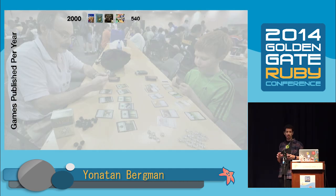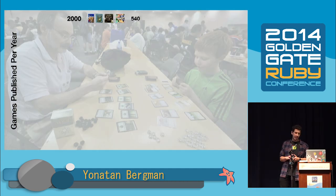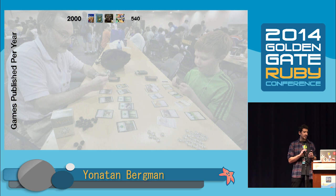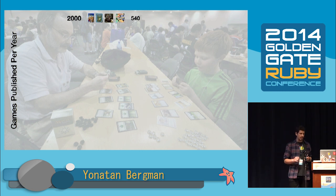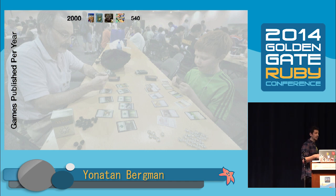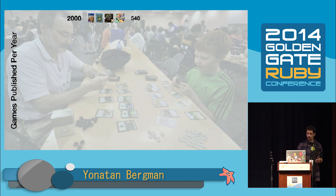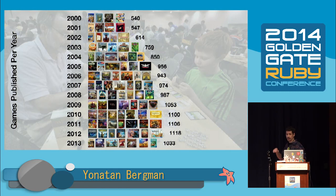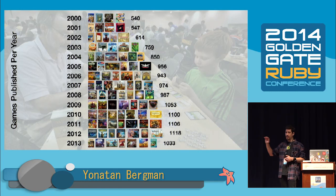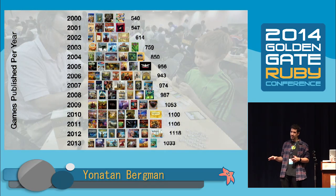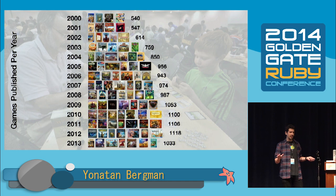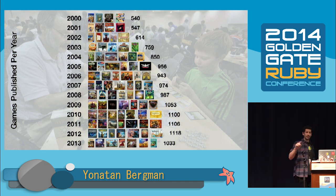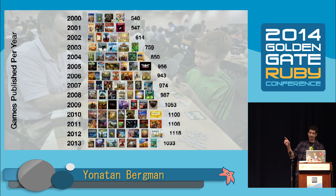We're now in a golden age of board gaming. Since 1999, sales have been growing at a rate of 10–20% each year, with the number of games published growing accordingly — from around 500 games published in the year 2000 to more than 1,000 new board games published last year. That's a crazy amount.